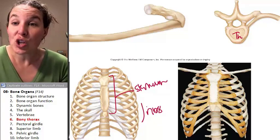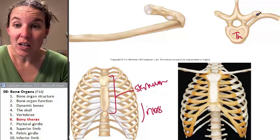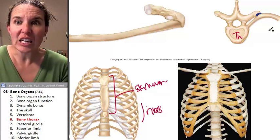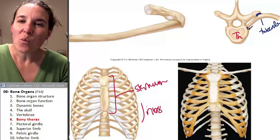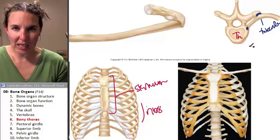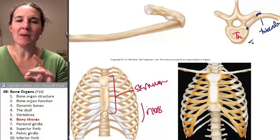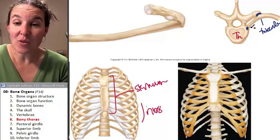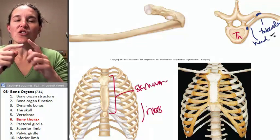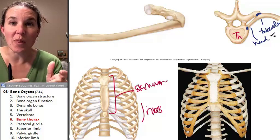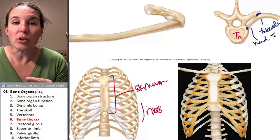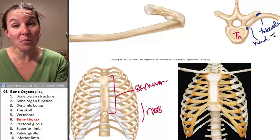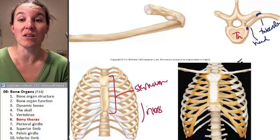We have two places where the ribs articulate. The first is the tubercle of the rib, which articulates with the body of the vertebra — that is called the head of the rib. So the head of the rib articulates with the body of a thoracic vertebra, and the tubercle of the rib articulates with the transverse process of the thoracic vertebra.